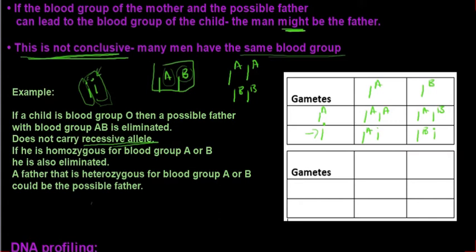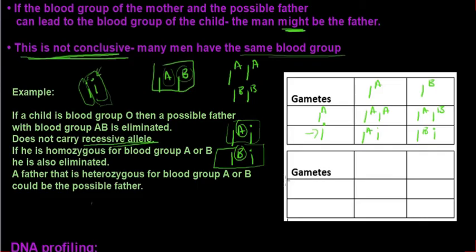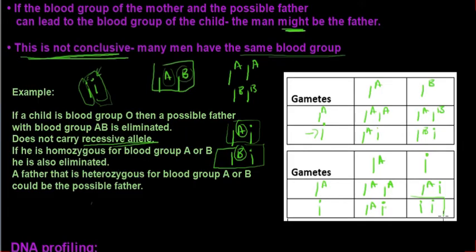But if a father is heterozygous for blood group A or B, he could then be the possible father. I'm going to do one of them in a genetic cross — it depends on whether it's A or B — using the mother as an example again. And we can see that if he is heterozygous, he could be the possible father because a blood group O is produced. It's really not that complicated; you just need to keep track of what's going on.